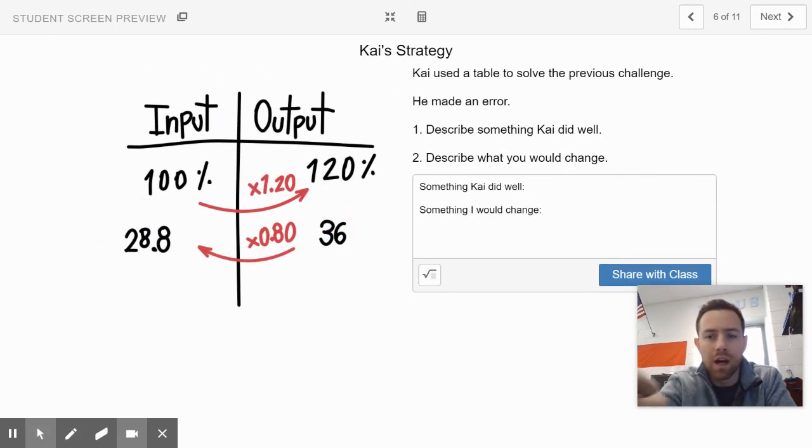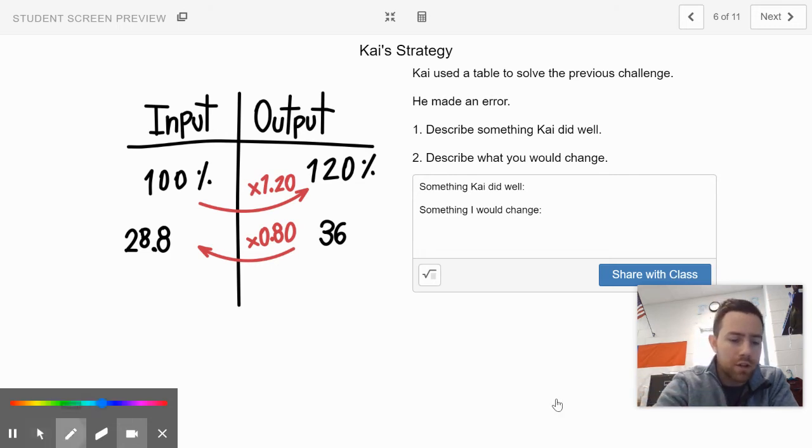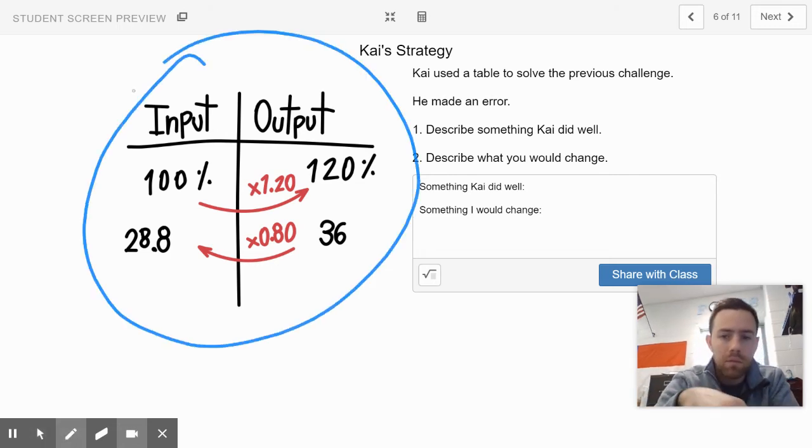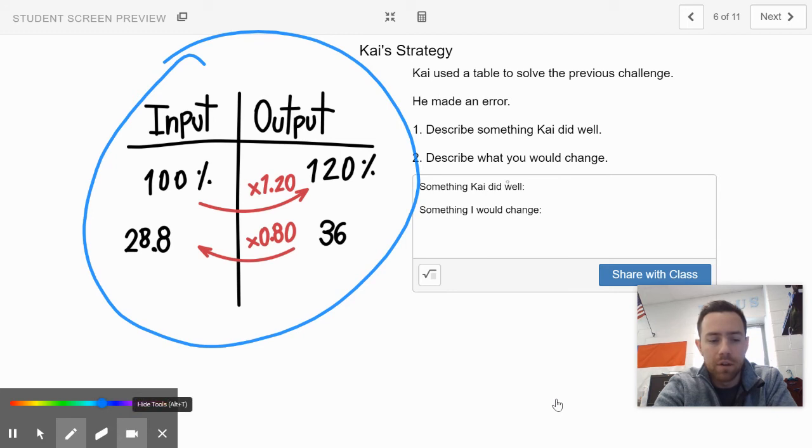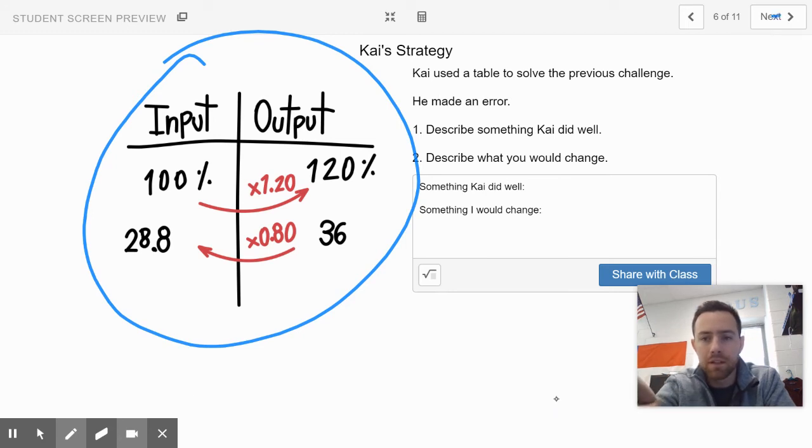Let's go work on slides four and five and come back to Edpuzzle. So finally, slide six and seven are kind of together. Slide six talks about Kai. Kai uses this strategy here. I want you to describe something that you think he did well. What do you think he did well? Describe something that maybe you would change about Kai's strategy there on slide six.